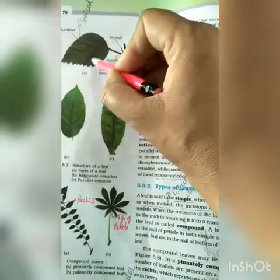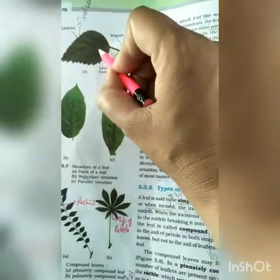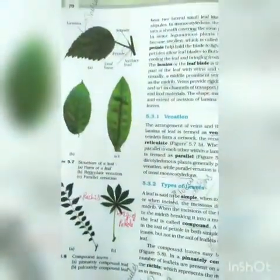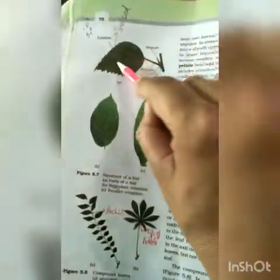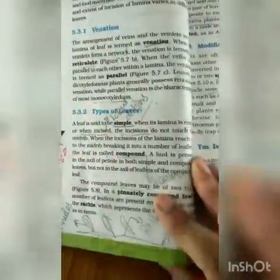When there are incisions, sometimes these cuts reach the mid-rib, and sometimes they remain up to the blade only. When the cuts reach the mid-rib, it is called a compound leaf. When the lamina remains entire, it is called a simple leaf.